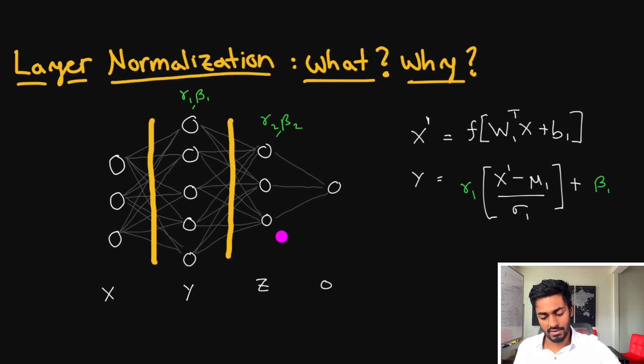Now gamma 1 and beta 1 and also gamma 2 and beta 2 are learnable parameters. So as we keep getting more and more inputs to this network over time and we perform backpropagation step these values are going to be learned and changed in order to optimize the objective of the loss function.